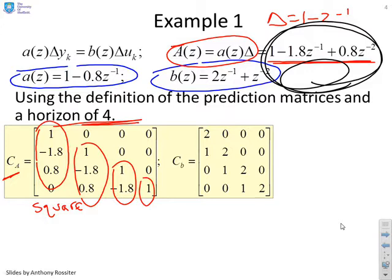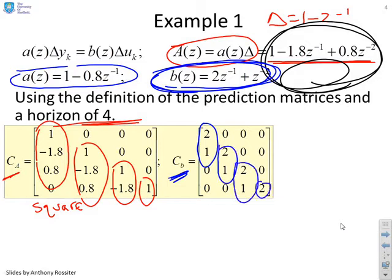If we look at CB, we're just going to use the parameters of the B polynomial, which are 2 and 1. You can see vertically I've simply entered the parameters, and then when I start running out of space, I just put the parameters that will fit. Hopefully that's straightforward. You could produce a piece of code to do this very easily, probably filling in the diagonal, then the sub-diagonal, then the sub-sub-diagonal, and so on.